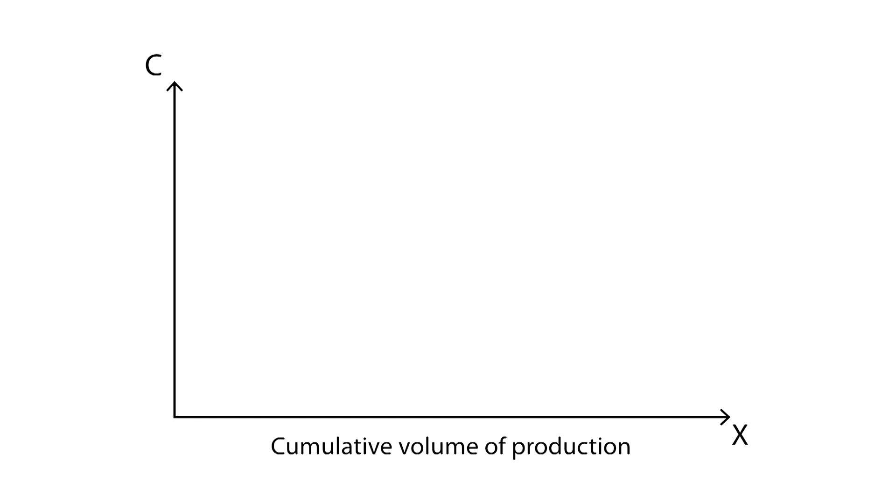Let's see a graphical representation. The horizontal axis shows the cumulative volume of production, x, while the vertical axis measures direct cost per unit produced, c. This is the experience curve. There is a reduction in direct cost of production of a particular product as a consequence of an increase in the firm's experience.